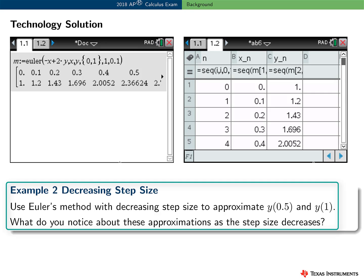So for you to try, use Euler's method with this initial value problem with decreasing step size to approximate these two values. And here's a nice conceptual question: What do you notice about these approximations as the step size decreases?